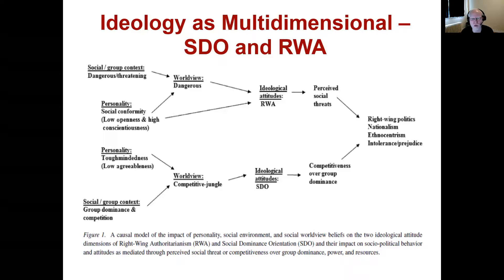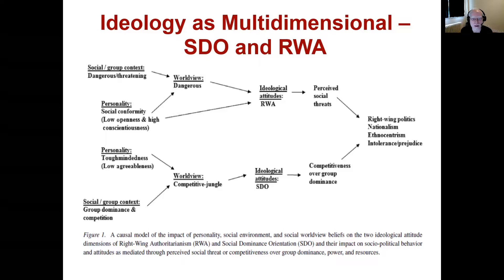These ideological attitudes influence whether we view social threats and competition over dominance as pervasive. If you tend toward right-wing authoritarianism and SDO — viewing competition for group dominance and perceived social threats — this will lead toward right-wing politics, nationalism, ethnocentrism, and intolerance and prejudice. This is a map of how all these different things come in, showing how both outside influences and personality shape these things.